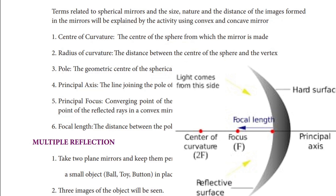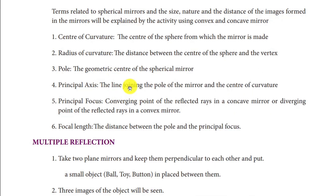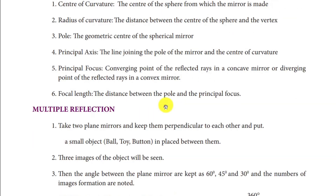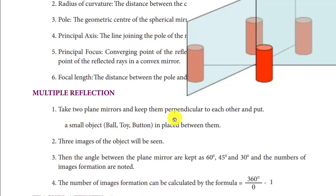The next topic is Multiple Reflection. When two plane mirrors are placed perpendicular to each other, we can see three images. When the angle between the two mirrors changes, the number of images changes. For example, at 60 degrees, 45 degrees, or 30 degrees, the number of images will be different.